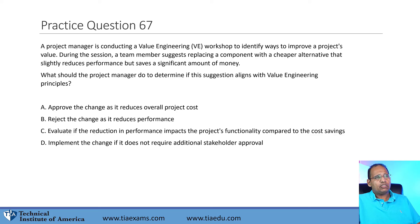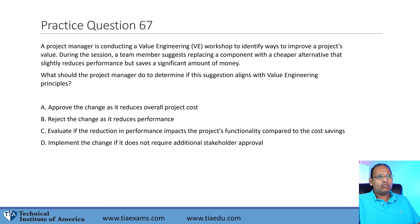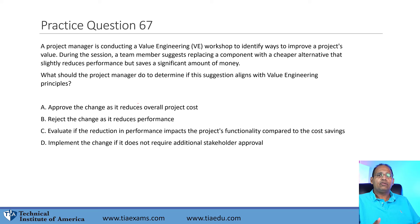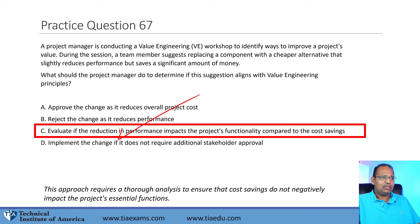Question 67. A project manager is conducting a value engineering workshop. A team member suggests replacing a component with a cheaper alternative that slightly reduces performance but saves significant money. What should the project manager do? A: Approve the change as it reduces project cost. B: Reject the change as it reduces performance. C: Evaluate whether the reduction in performance impacts project functionality. D: Implement the change if it doesn't require stakeholder approval. Use the mindset — someone is asking for a change. Never approve, reject, or implement without evaluating first. C is the best answer.